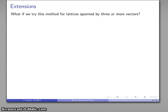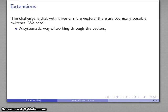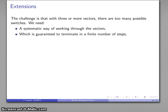What if I try this with a lattice spanned by three or more vectors? The problem is that if I have three or more vectors, there's too many possible ways of switching around those basis vectors. So what we want is some sort of systematic way of working through our basis vectors. And the other requirement is we want to make sure that this terminates—whatever the algorithm is, an algorithm that doesn't terminate is not an algorithm. We want to make sure that the algorithm terminates after a finite number of steps.